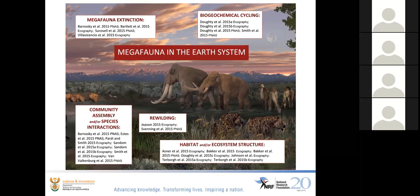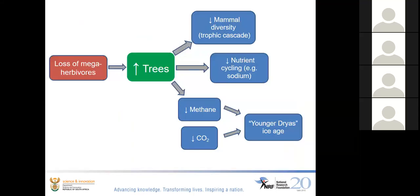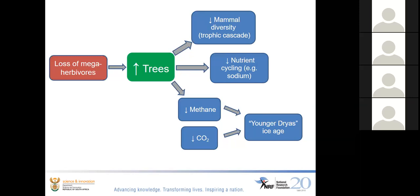The main theory is that with the loss of megaherbivores there was a massive increase in trees and shrubs because these animals had been keeping areas open through their massive consumption. Cascading consequences included loss of smaller species that couldn't handle thick tree cover, impacts on nutrient cycling such as sodium which cycles more slowly when trees take over, and perhaps most controversially, a massive increase in leaf area leading to reductions of CO2 in the atmosphere, as well as methane — they even argued this might have tipped the planet into one of the more recent ice ages.